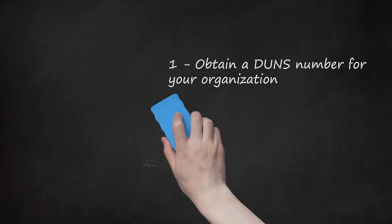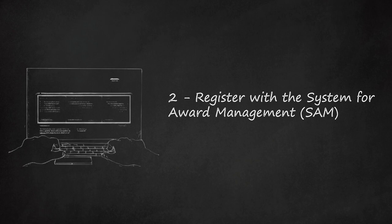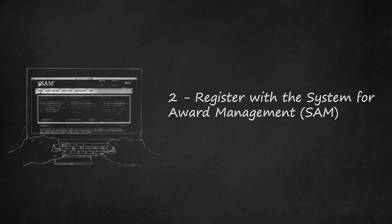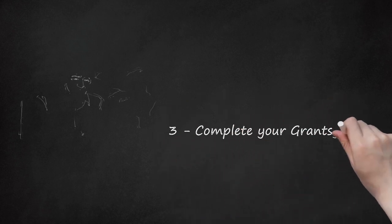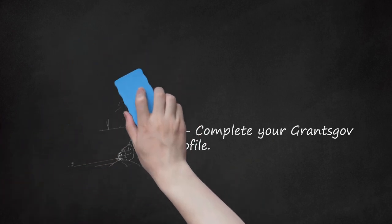Step 2: Register with the System for Award Management (SAM). SAM is a federally maintained site that verifies the eligibility of organizations to do business with the federal government. You will need to visit this site and register the names of any individuals in your organization who will be participating in the grant application process. This step can take up to a week or two, and may take longer if your organization does not already have an employer identification number. Step 3: Complete Your Grants.gov Profile. After completing the first two steps, you will return to Grants.gov and register your organization. You will be asked for identifying information about the organization and the individuals submitting the application, and prompted to create a user ID and password. This final step can be completed in minutes, after which you will be directed to your Applicant Center page to begin or monitor applications.